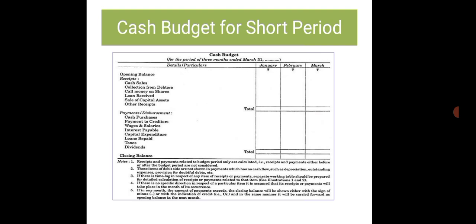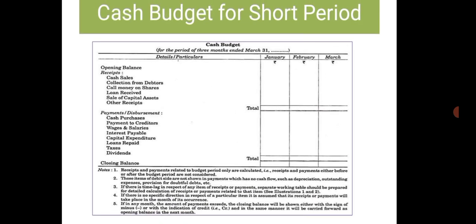Here is a format of cash budget for short period. We can see items like opening balance, receipts like cash sales, collection from debtors, sale of capital assets, and other receipts. In payments we have cash purchases, payment to creditors, wages and salaries, interest payable, capital expenditure, loans repaid, taxes and dividends.